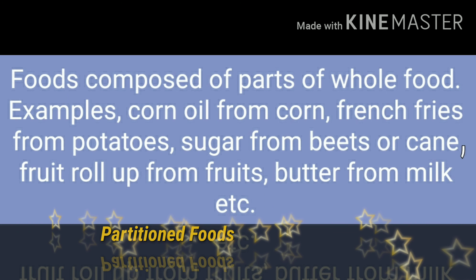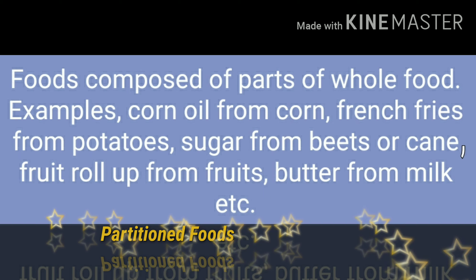Partitioned foods are foods composed of parts of whole food. Examples include corn oil from corn, French fries from potatoes, sugar from beets or cane, fruit roll from fruits, and butter from milk, etc.